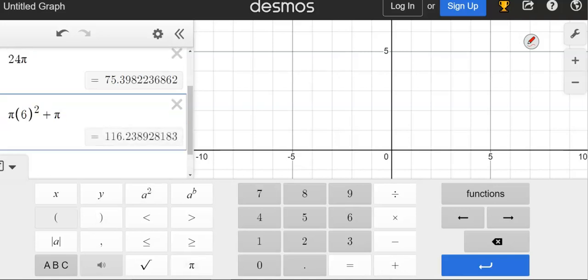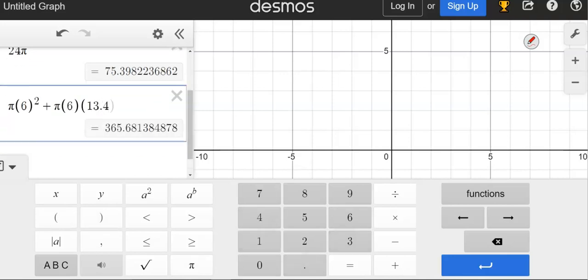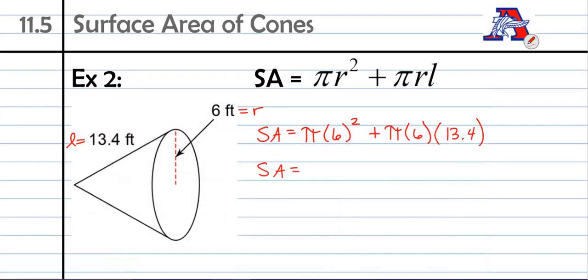π times 6 times 13.4, and there we go: about 365.68 square feet. And that'll do it. Go ahead and complete the practice for 11.5.